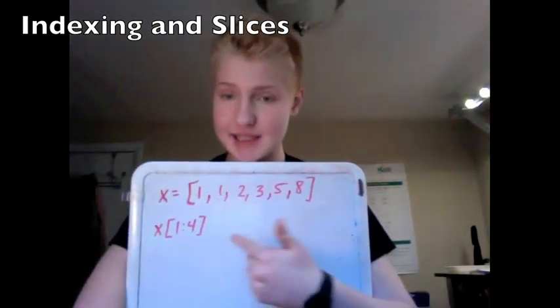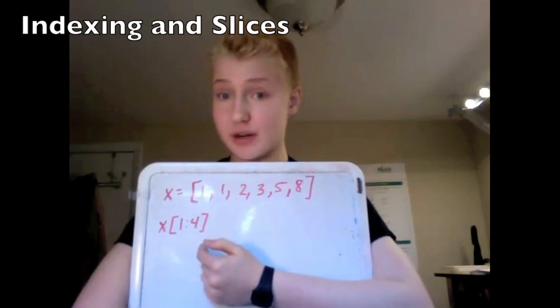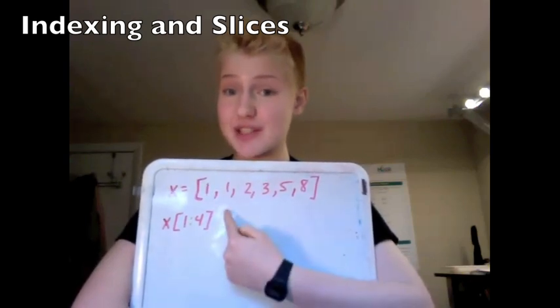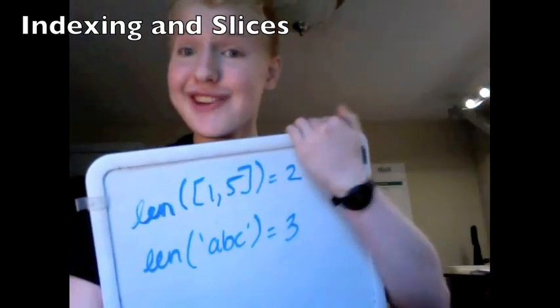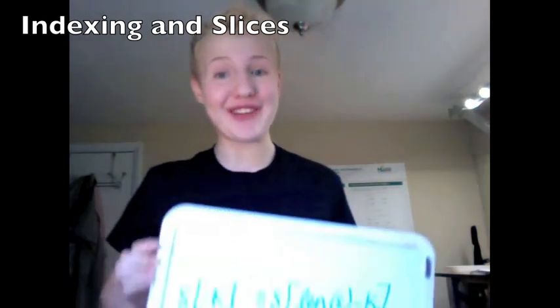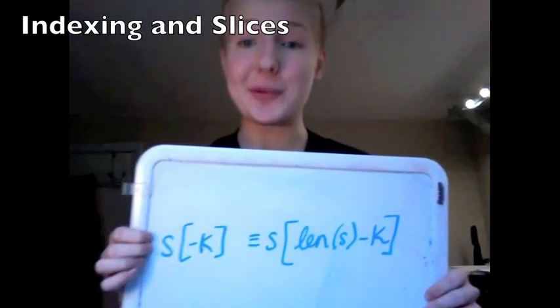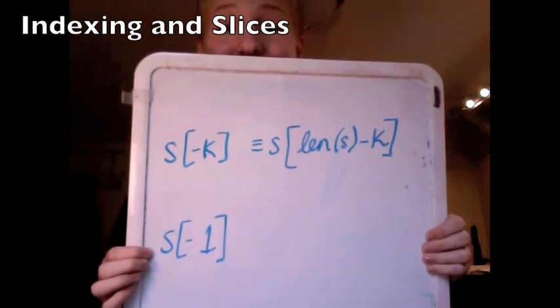Java has an equivalent of the slice called a view. However, in Java the view mutates as the larger collection changes. Unlike Java, Python makes a shallow copy when a slice is used in an expression. The len function gives the size of any collection or sequence type, like so. Python also has a convenient piece of syntactic sugar which allows slices to have negative indices. For a positive k, it's evaluated as len(s) - k. In particular, index -1 denotes the last element of a sequence, which is super handy.